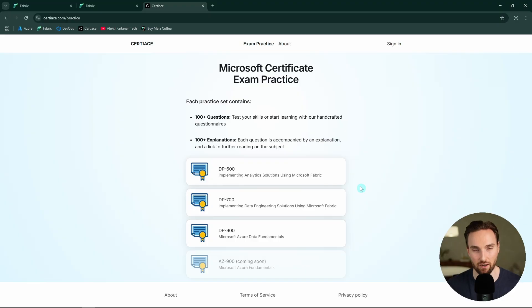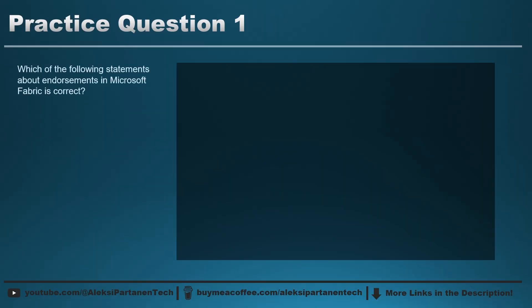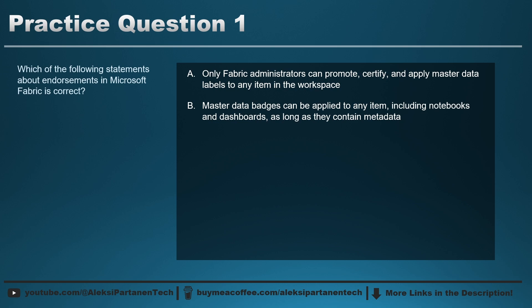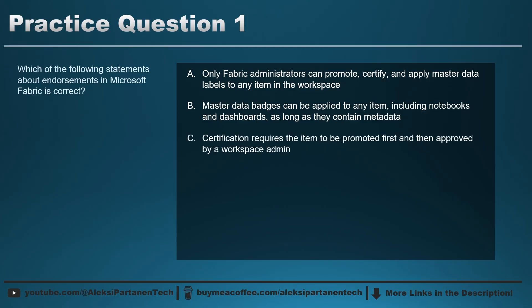Now let's have that practice question. The question is: which of the following statements about endorsements in Microsoft Fabric is correct? A: Only Fabric administrators can promote, certify, and apply master data labels to any item in the workspace. B: Master data badges can be applied to any item, including notebooks and dashboards, as long as they contain metadata. C: Certification requires the item to be promoted first and then approved by a workspace admin. D: You can add a certified tag and master data endorsement at the same time to a lakehouse. Now think about the answer and pause the video. I'll reveal the answer in 3, 2, 1.